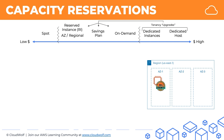You're just making a reservation of capacity so that capacity is guaranteed, and you will be paying for it regardless of whether you launch an instance that uses that capacity or not. And then when you do launch an instance that matches the family type that you specified in the capacity reservation, the tenancy type, and some other features, then it will take on that capacity.